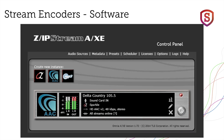This is the Zipstream AXE. It's the most basic stream encoder offered from the Telos Alliance. Because audio processing, as we've been talking about, is key to any audio encoder, Omnia-designed three-band processing with look-ahead limiting is included even in this affordable stream encoder.